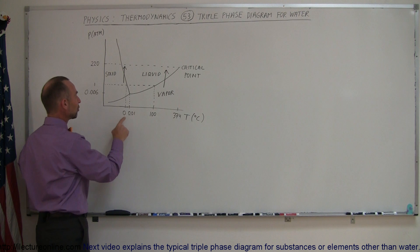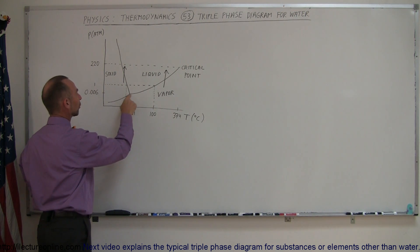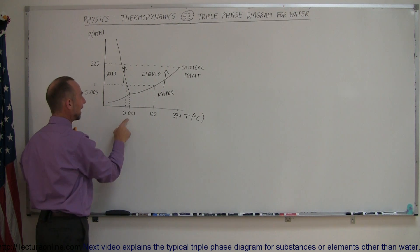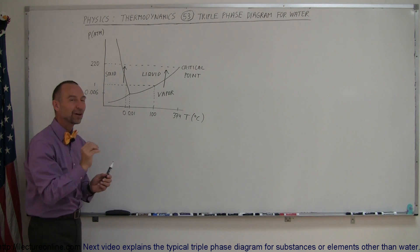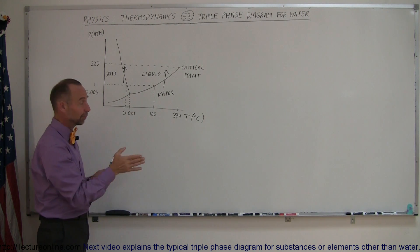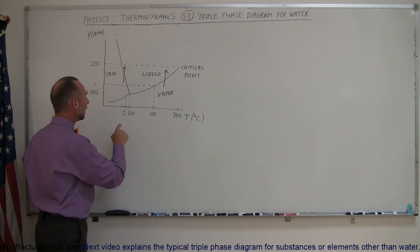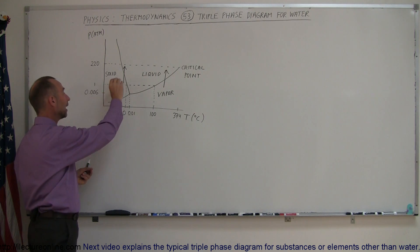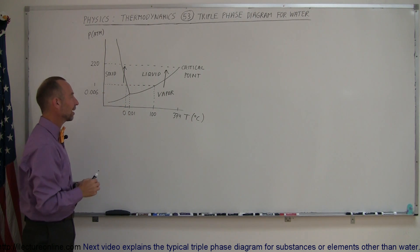Also notice that the triple point of water occurs right here when the pressure is 0.006 atmospheres and the temperature is just one one-hundredth of a centigrade degree above zero. Not absolute zero, but zero degrees centigrade. At that particular temperature and pressure, all three phases of water can exist at the same time. You can have solid, liquid, and vapor all at the same time.